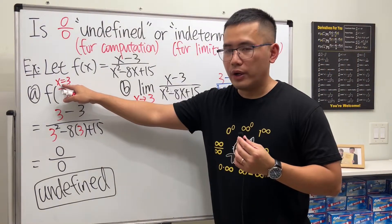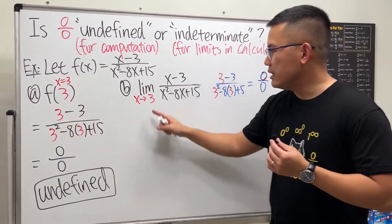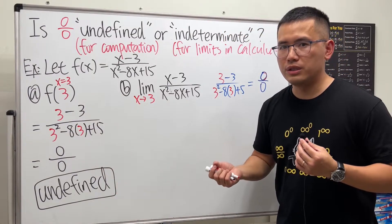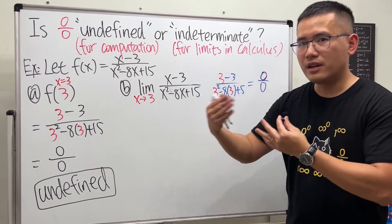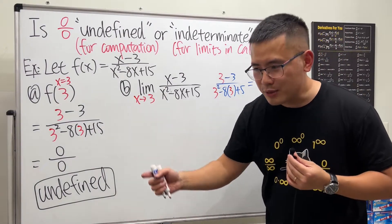And the biggest difference is that this is when x is exactly equal to 3, and this is x is approaching 3, such as 3.0001, and we'll maybe get even closer, 3.00001.